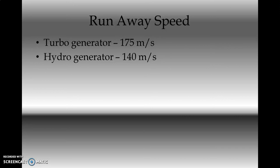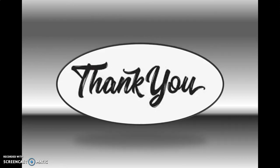For salient pole machines, peripheral speed and the runaway condition are very important. Peripheral speed is decided by the diameter D, so while deciding the diameter, we always have to take care of the constraint of peripheral speed. Thank you very much for watching. Keep watching.